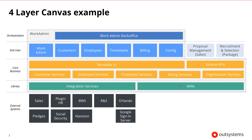In orange is the core business layer, where all our core business processes and concepts should go. We can also see the APIs that are available for external systems to use. At the top right, we can see two external systems that are going to consume these APIs. The blue layer represents end-user modules or user interfaces, and the dark blue portals or orchestration types of modules.